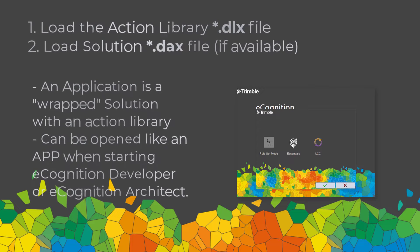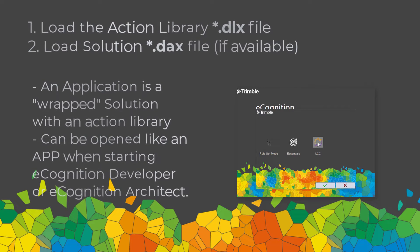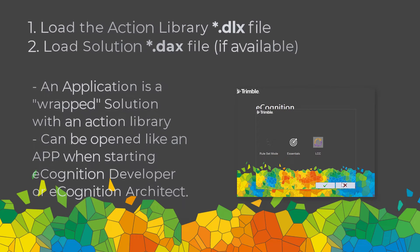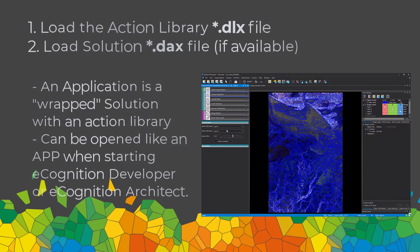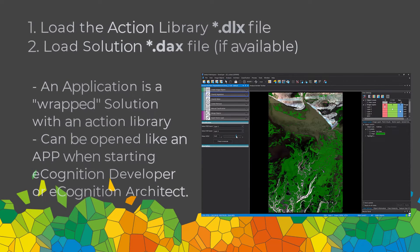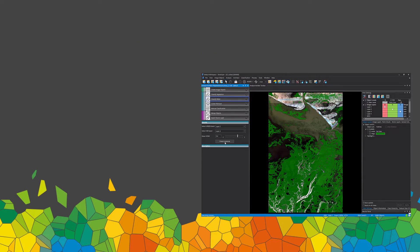If you put the solution into the action library, make sure it has a certain structure, and copy that folder into the installation directory and set it up correctly, you'll get an app icon when you start eCognition Developer or Architect that you can choose from. For each application you have, put it in the appropriate directory and once you start eCognition Developer or Architect it will pop up as an app — you select it and it opens automatically.